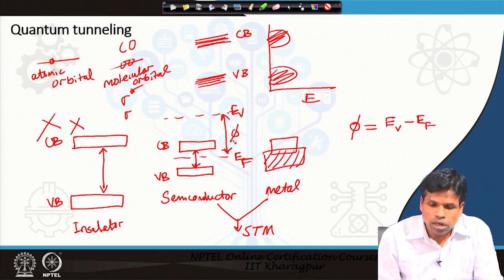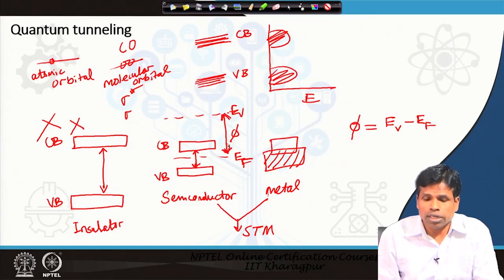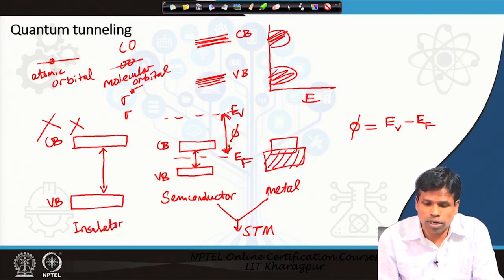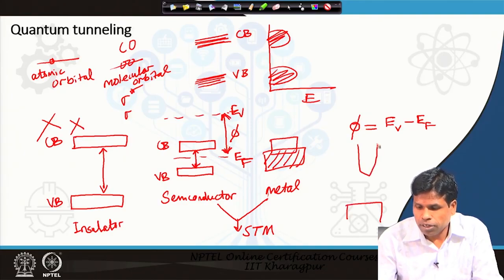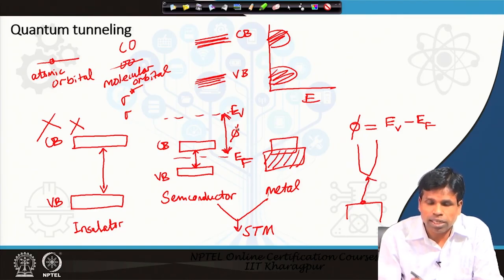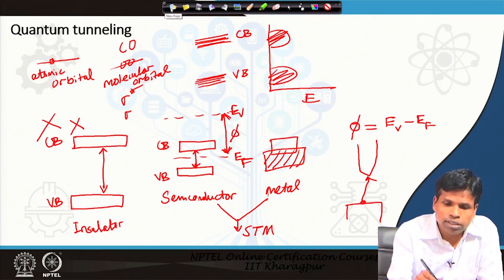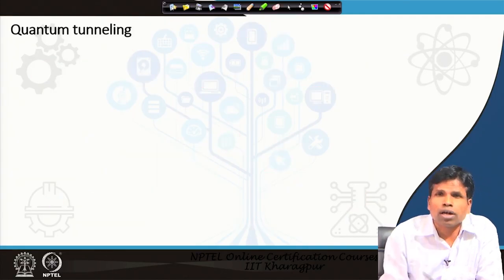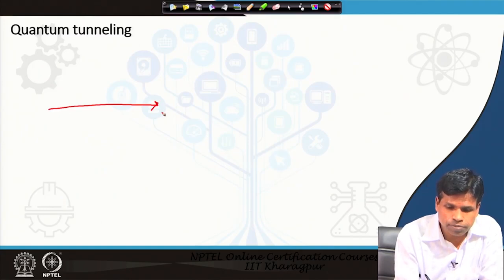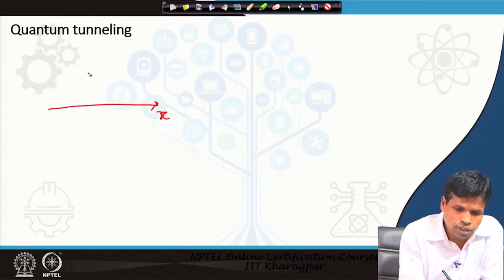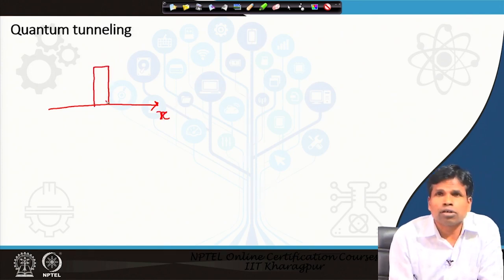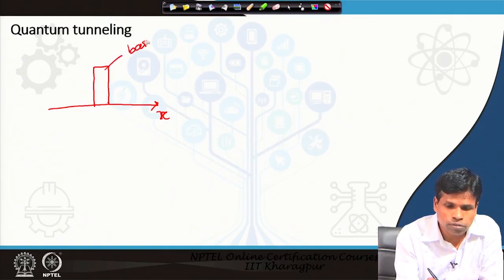This work function is nothing but a type of barrier for electrons to cross in order to go to the other side. Like if we have a sample here and a tip here, if an electron has to go from the sample to the tip, it has to cross a barrier. In case of solid materials, the work function is the barrier. If we say this barrier is a type of wall — let us say this is the energy on the y-axis and x-axis — then this is the barrier or wall.